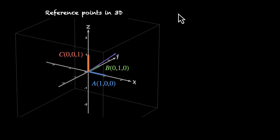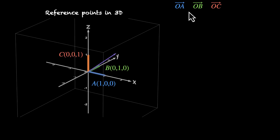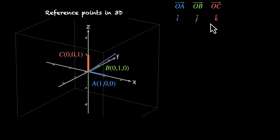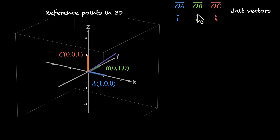We'll use vectors OA, OB, and OC as our references. In the vector world, we have special names for these — we call them i-cap, j-cap, and k-cap. i-cap is a unit vector along the x-axis, j-cap is the unit vector along the y-axis, and k-cap is the unit vector along the z-axis — all three along the positive axes. These unit vectors will be used to represent all other vectors.